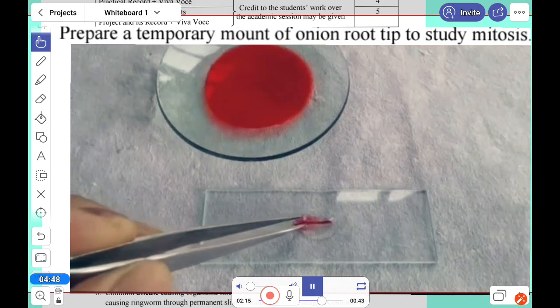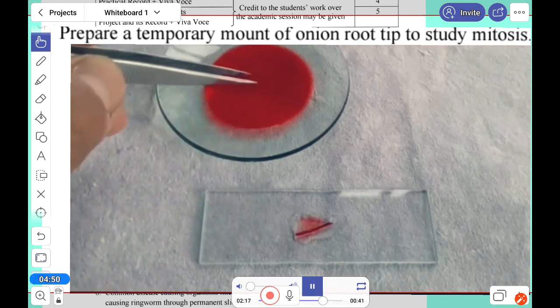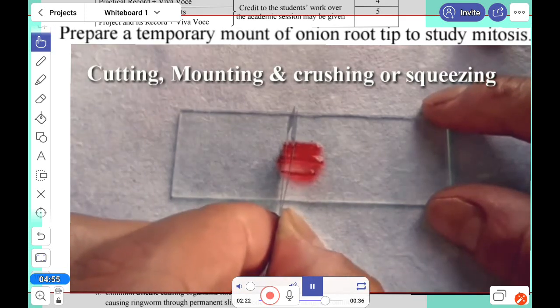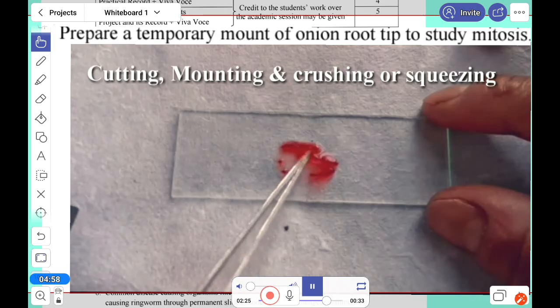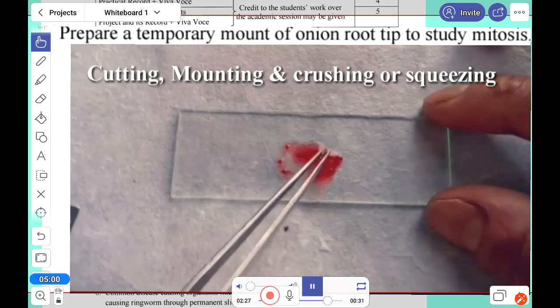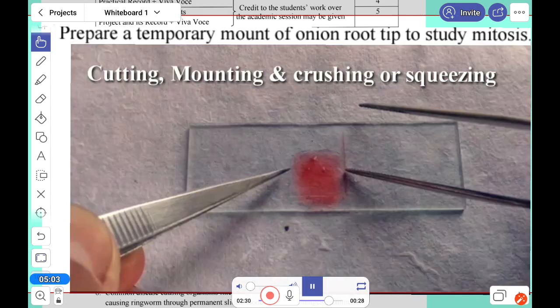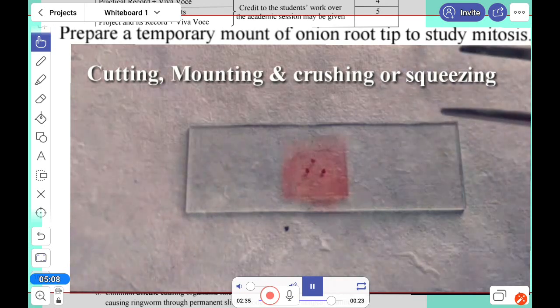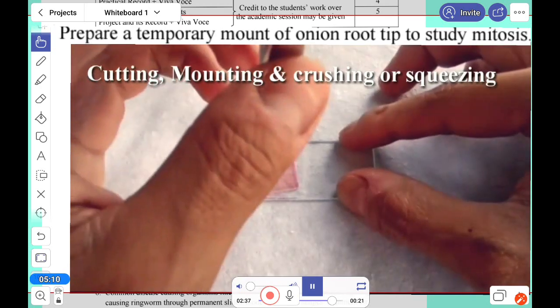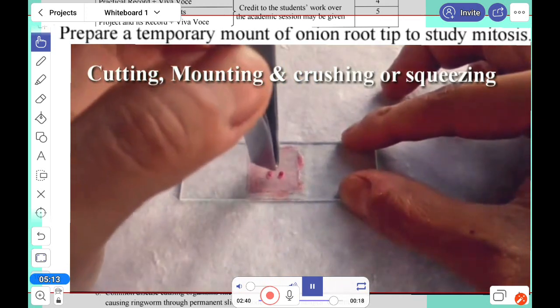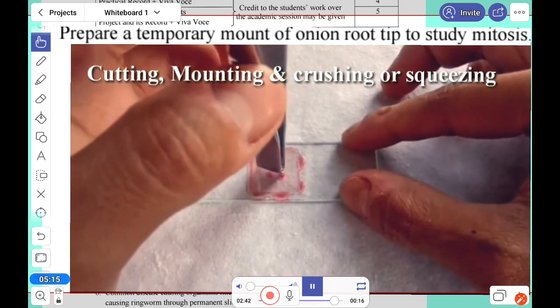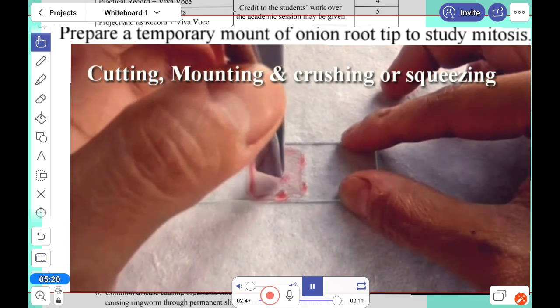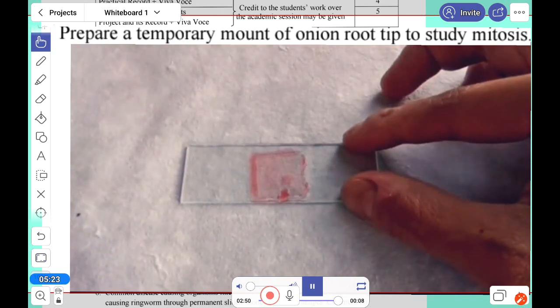After that, this root, the small root, we'll take it, and with the help of a blade we'll cut it into small pieces. Large pieces we'll reject or keep for another purpose. Then we'll put a cover slip. After that, one thing we have to do with the blunt end: we'll crush or squeeze the cells before watching under the microscope.